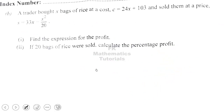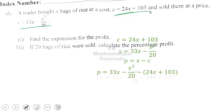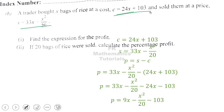Part b: a trader bought x boxes of rice at a cost C = 24x + 1 naira and sold them at a price S = 3x − x²/20. We need to find the expression for the profit. Profit = selling price − cost price. Expanding: profit = 33x − x²/20 − 24x − 103, which simplifies to give the profit expression.